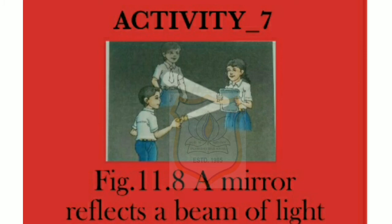Now do the same activity using a book instead of a mirror. You cannot see the reflected beam of light. Conclusion: The beam of light after striking the mirror is reflected from the mirror. Shiny, well-polished surfaces like mirrors reflect light well. Dull surfaces like a book do not reflect light as the mirror does.